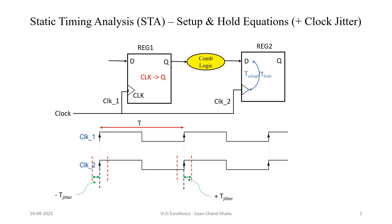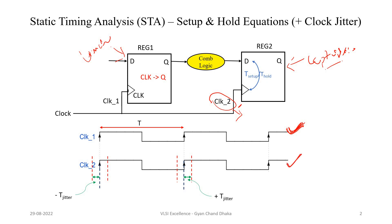In more detail, clock one is going to the launch flip-flop and clock two is going to the capture flip-flop. Because of the clock jitter, clock two may look like a shifted signal. The clock two rising edge ideally is supposed to happen at a specific point, but it might happen anywhere within a window — there is a possibility that this rising edge can shift from one extreme to another. Similarly, the next rising edge can also shift within its own window.